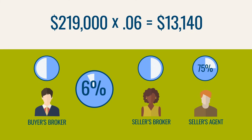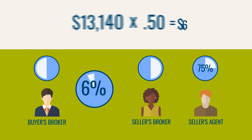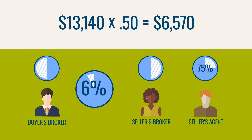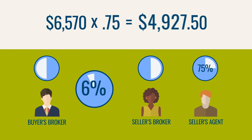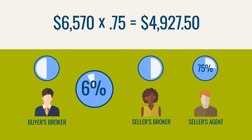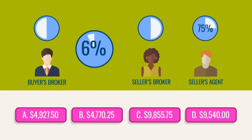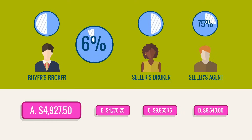The commission is split evenly between the two brokers, so each side gets 50%: $13,140 times 0.5 equals $6,570. Finally, figure out the agent split, which is 75% of $6,570: $6,570 times 0.75 equals $4,927.50. The answer is A, $4,927.50.